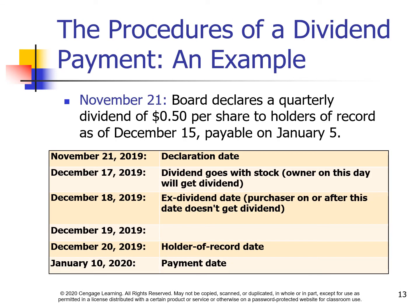The procedures of a dividend payment — an example: on November 21st, the board declares a quarterly dividend of $0.50 per share to holders of record as of December 15th, payable on January 5th.